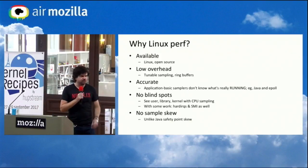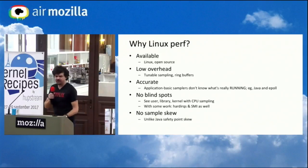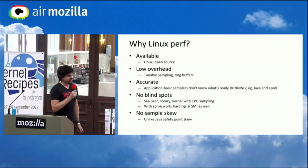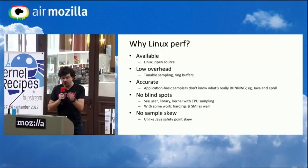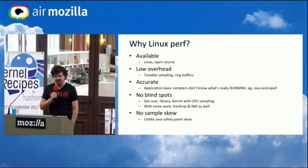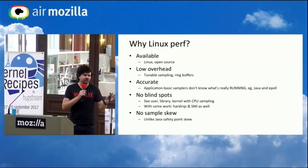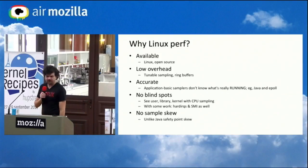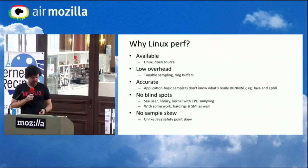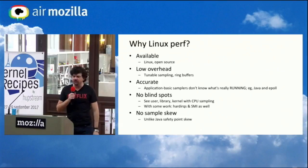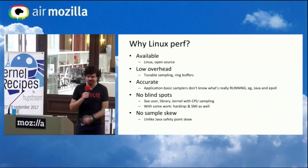We use Linux perf because it's on our instances, it's low overhead, it's accurate, and it can see everything. Java and application-level profilers don't really know what's running on CPU. Having an asynchronous, interrupt-driven profiler, the kernel knows the truth — it knows if your thread is running or not. Sometimes a Java profiler tells you paths are running when they're really not. If you look up Java and epoll, you'll see many people complaining about epoll burning CPU, often because the JVM TI profiler is not working correctly. With the kernel asynchronous profiler, you take a stack trace when you want, giving a more accurate profile.